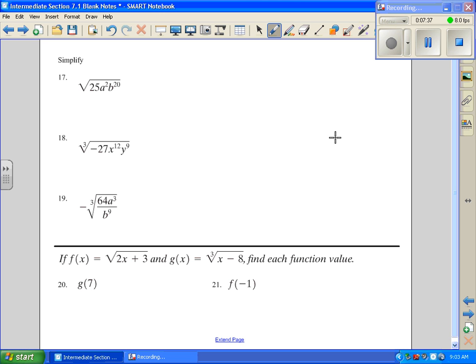So we continue on with number 17. And it's going to be what squared gives me 25. And that's going to be 5. And then for the variables, divide by the index. There's a known 2 there. So 2 divided by 2 is 1. So I'm just going to put a. And 20 divided by 2 is a 10.